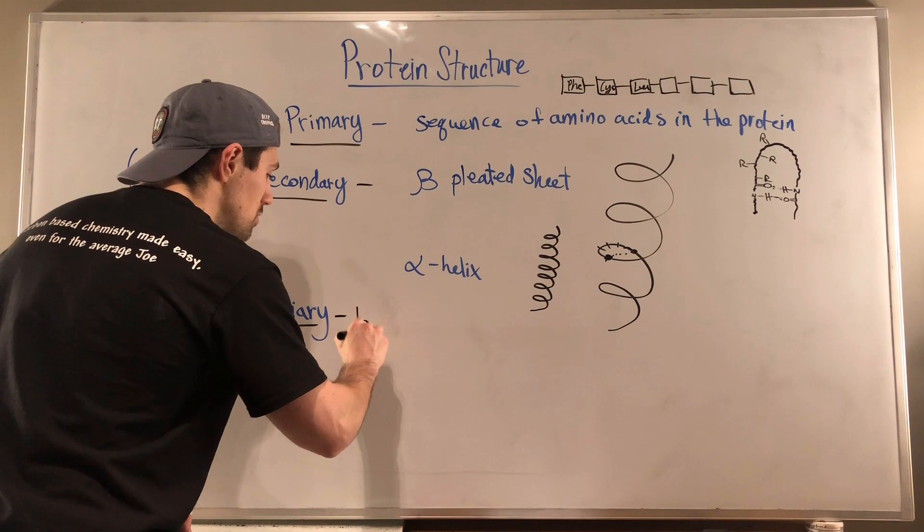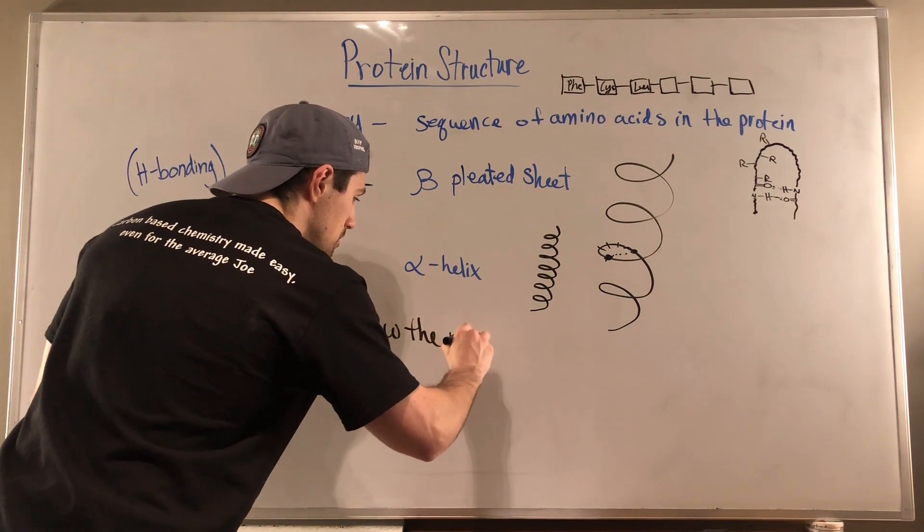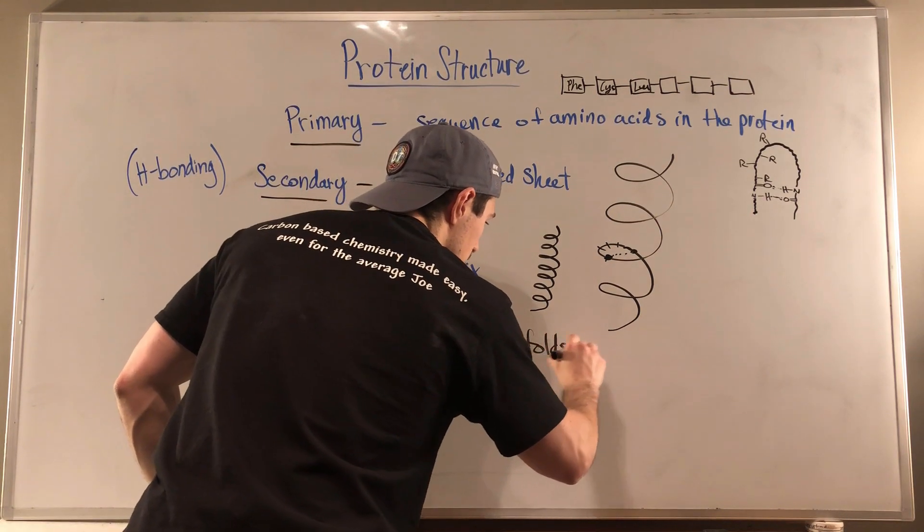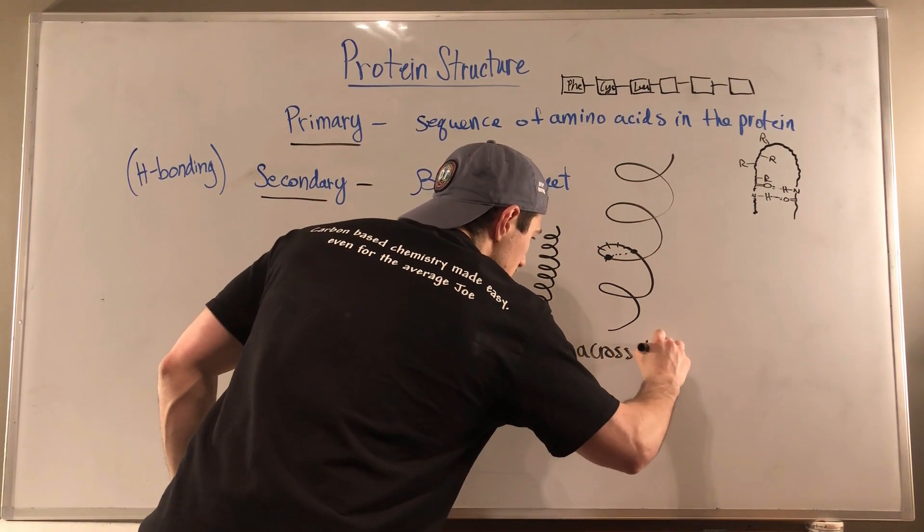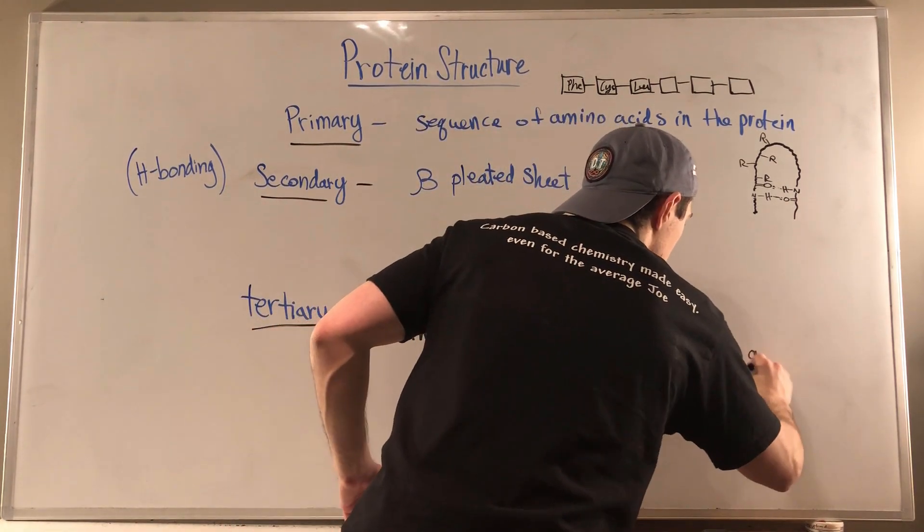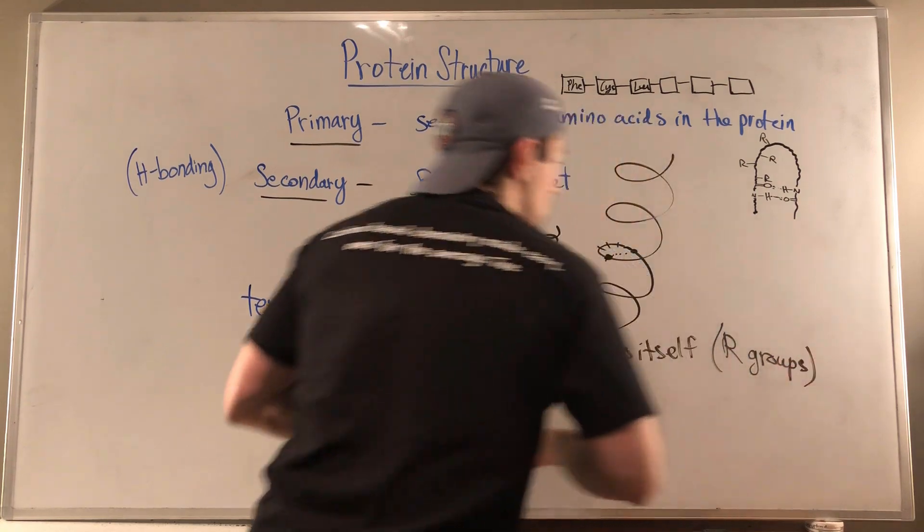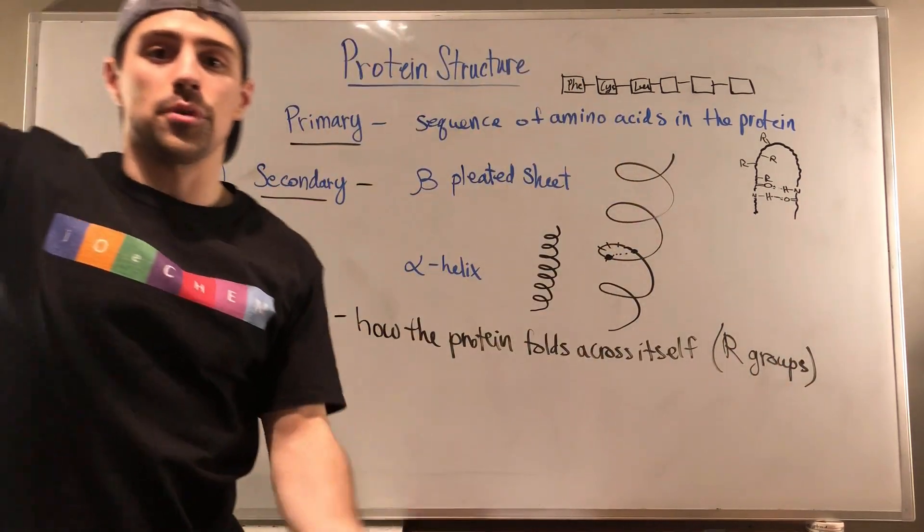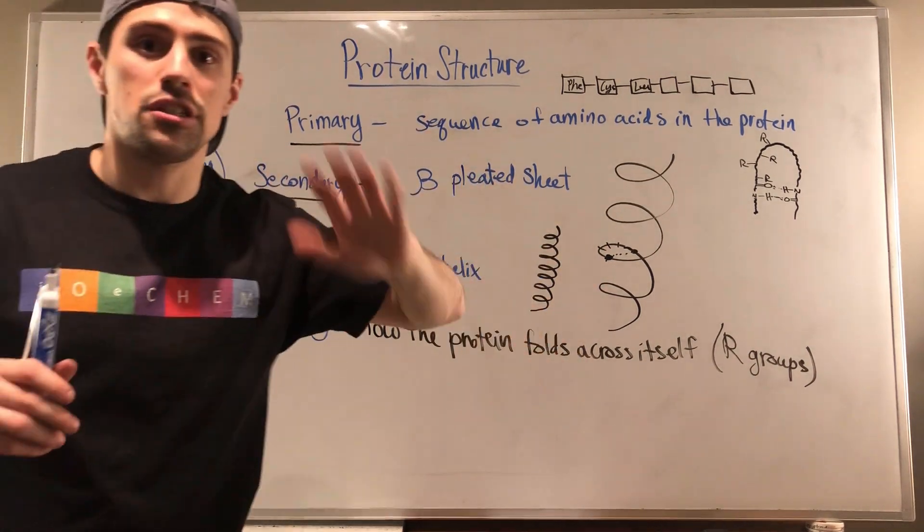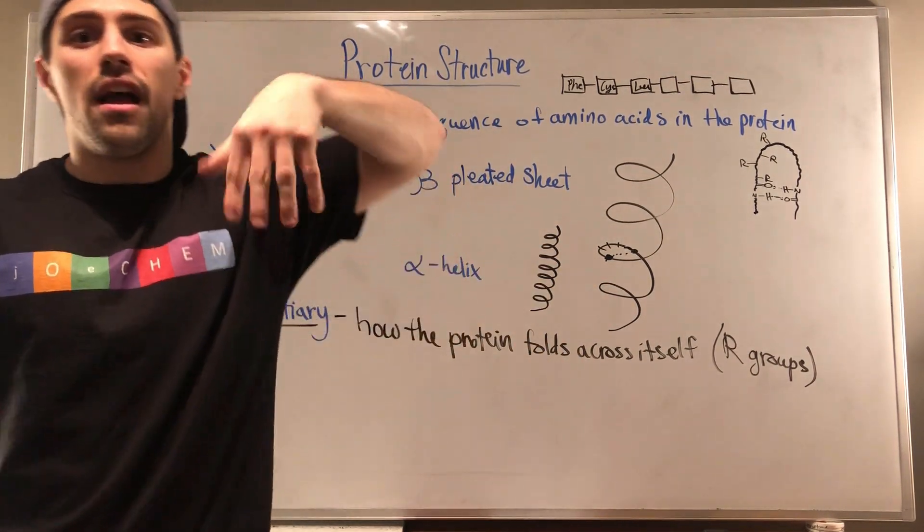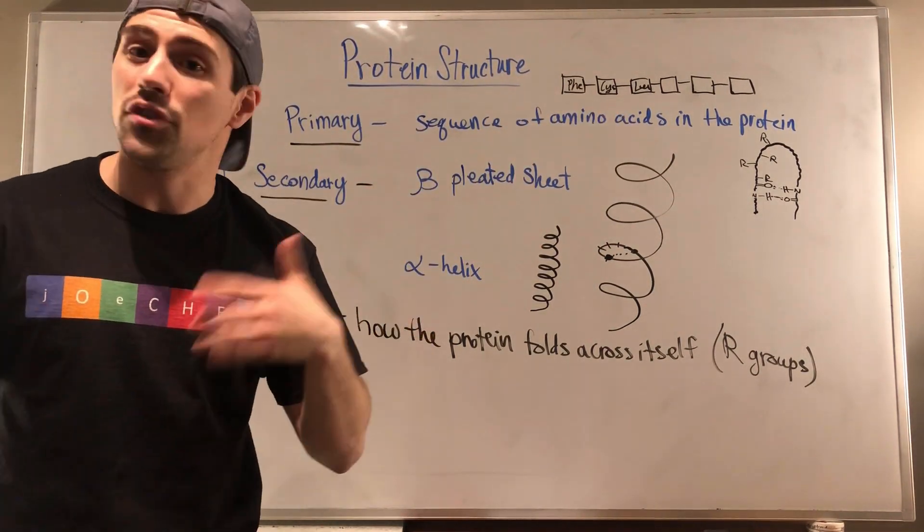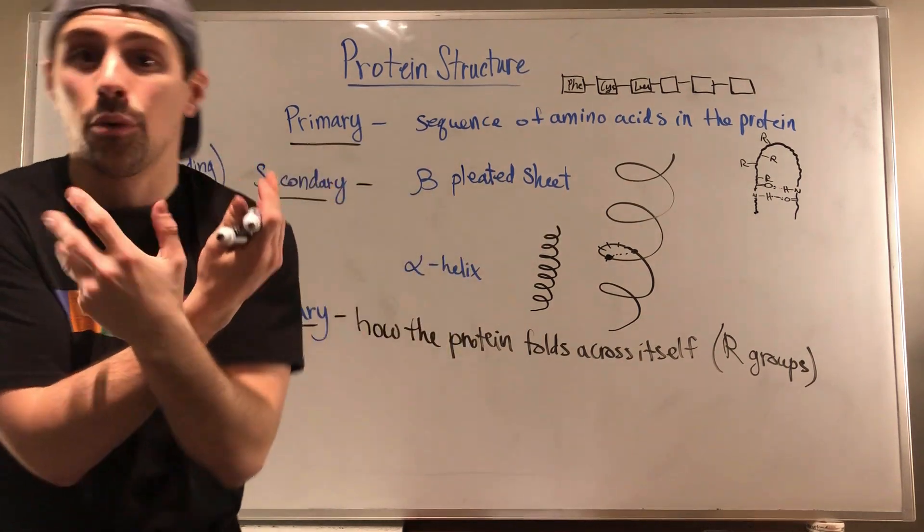It's kind of how the protein folds across itself. And this is largely affected by what kind of R groups you have. So if you have a giant, giant, giant, giant protein, it's a giant spaghetti monster. At this point, you have so many sections of beta pleated sheets or alpha helixes. Eventually different parts are going to be interacting with other sections.